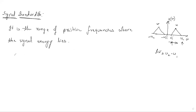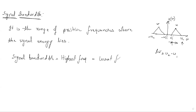Signal bandwidth is calculated by subtracting the lowest frequency from the highest frequency. In this example, the highest frequency is omega 2 and the lowest frequency is omega 1, so bandwidth equals omega 2 minus omega 1. If you are writing frequency bandwidth in terms of omega, you write the unit as radians per second.